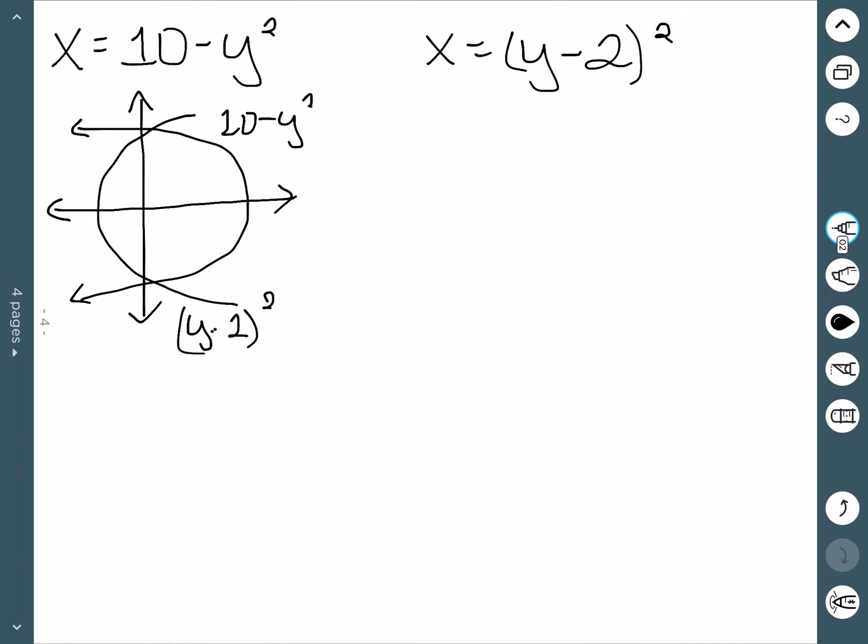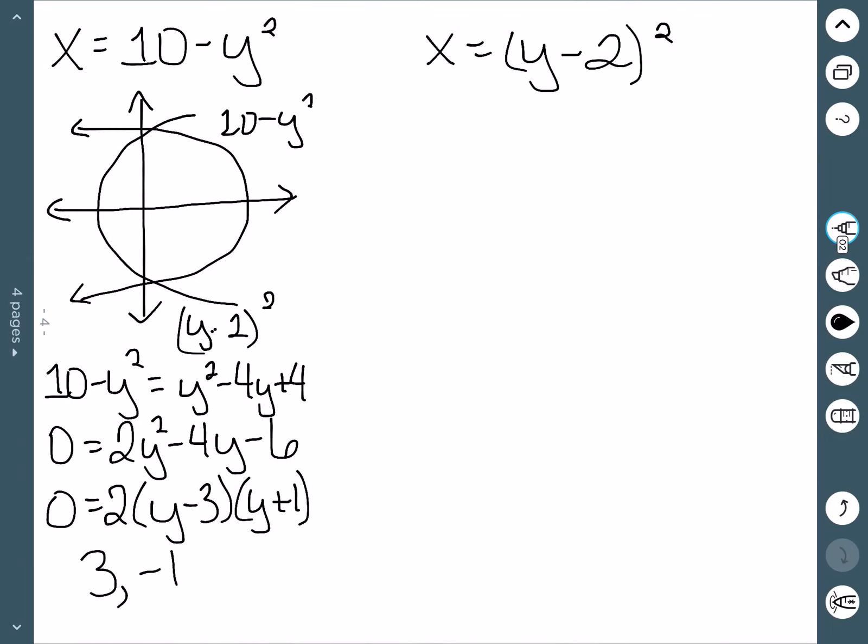One last example. So we have the graph here and these are already solved in terms of x. So we just need to find our intersection points. So I have 10-y² is equal to, and if I multiply out the second function, I have y²-4y+4. Getting everything on one side would give me 2y²-4y-6. And if I try to factor this, I would end up with 2 times (y-3)(y+1). So my intersection points are 3 and -1.